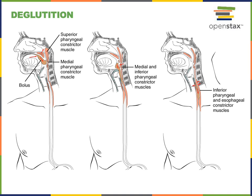Deglutition, commonly referred to as swallowing, is the process of moving a bolus from the oral cavity into the stomach. There are three phases. It starts with the voluntary phase, where the tongue pushes the bolus into the pharynx. Then there's the pharyngeal phase, coordinated by the deglutition center in the medulla oblongata, which regulates the skeletal muscles of the pharynx to propel the bolus into the esophagus.